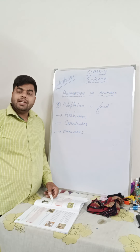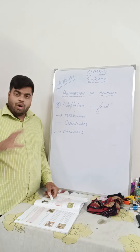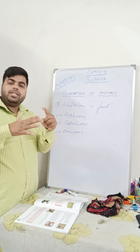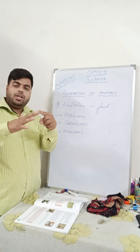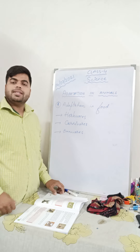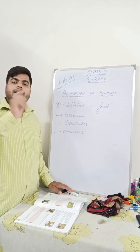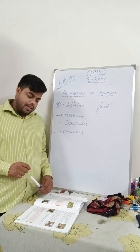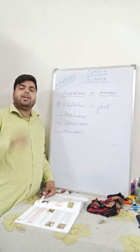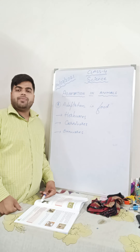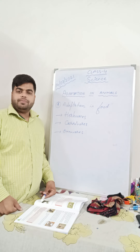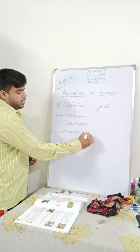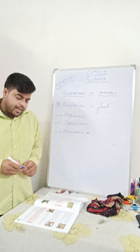There are flesh eating birds also. There are a few birds which feed on flesh — for example eagle and vultures. They have very sharp claws with very long and pointed nails, and a pointed and curved beak, so that they can tear the flesh of other animals.